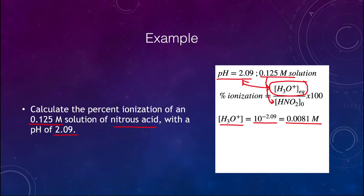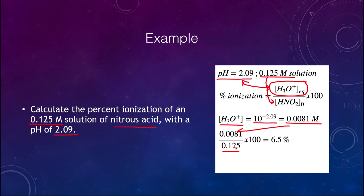Now we know the concentration of the hydronium ion, and we can place that in our equation. That goes in the numerator; we already had the 0.125 for the molarity of the solution in the denominator. We divide those two and multiply by 100, and we find a 6.5% percent ionization. So 6.5% of the acid has been ionized.